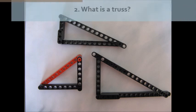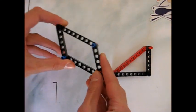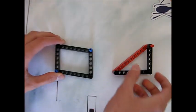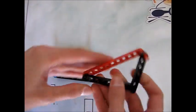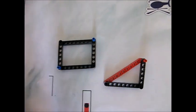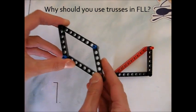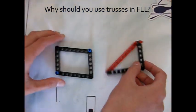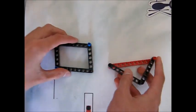So next, what is a truss? A truss is essentially a triangle-shaped construction, and it's stronger than building in rectangles in most cases, because a rectangle can get bent and skewed, but a triangle can't — because in order for that to happen, one of the side lengths of the truss would have to change, and that's not possible. Why should you use trusses in FLL? They're a stronger and sturdier construction, and they're great for something like a long arm that has to reach and could be in danger of bending.